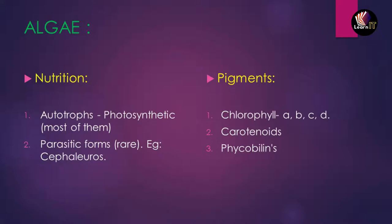There are basically three kinds of pigments. First is chlorophyll, which includes chlorophyll a, b, c, and d. Second is carotenoids, which contain carotene and xanthophyll. The third is phycobillins, which contain phycocyanin and phycoerythrin. These pigments are responsible for giving certain colors to the plants — for example, carotenoids give a dominant brown color.